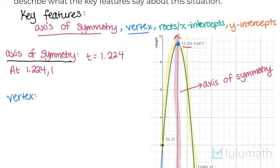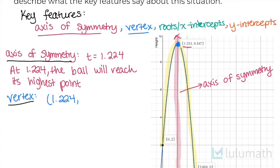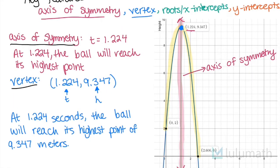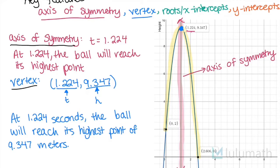Now for our vertex, we know that this is our vertex. And our vertex is (1.224, 9.347). So we already know what this 1.224 represents. It's the time at which the ball will reach its highest point. But this is our actual height. So this is our highest point. So the vertex is giving us two pieces of information. What time will the ball reach its highest point? And what will the highest point be? So we can say that at 1.224 seconds right here, the ball will reach its highest point of 9.347 meters. And I just want to say right here I needed to have added in that this is 1.224 seconds. So this is great. We've covered our first two key features.